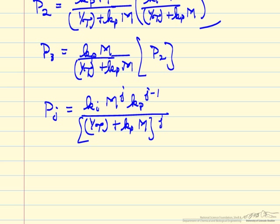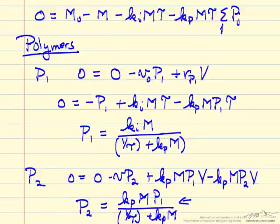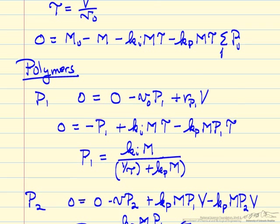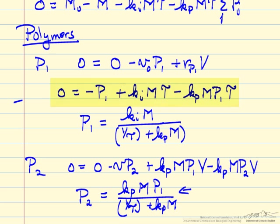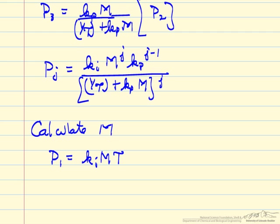Now I have a polymer concentration in terms of rate constants, the residence time, and the monomer concentration. The only thing left to generate actual numbers is to calculate the monomer concentration in the reactor — namely, how much of the incoming monomer has reacted. To do that, we go back to the mass balances and write out polymer 1, polymer 2, and so forth, bringing the polymer concentrations to the left side.